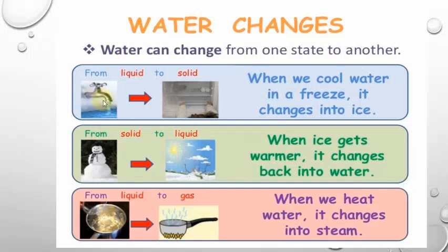Water can change from one state to another. Liquid water can change to solid — when we cool water in a freezer, it changes into ice. Ice can change back to liquid — when ice gets warmer, it changes back into water. And liquid changes to gas — when we heat water, it changes into steam.